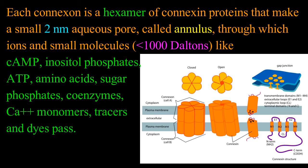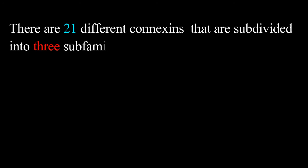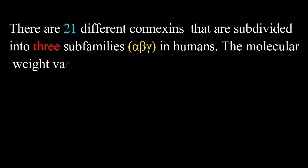There are 21 different connexins that are subdivided into 3 subfamilies: alpha, beta and gamma in humans. The molecular weight of connexin varies between 26,000 to 60,000 daltons.